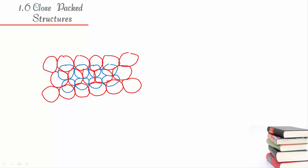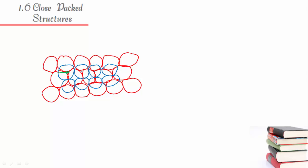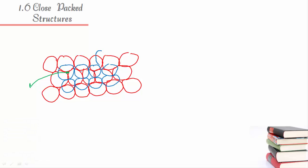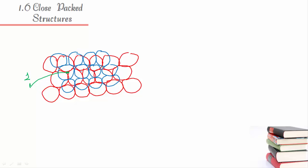Now if you look at it, you will see two different types of voids. One is this particular void, and the other is a different type of void. There are two different types of voids — what is the difference between both?